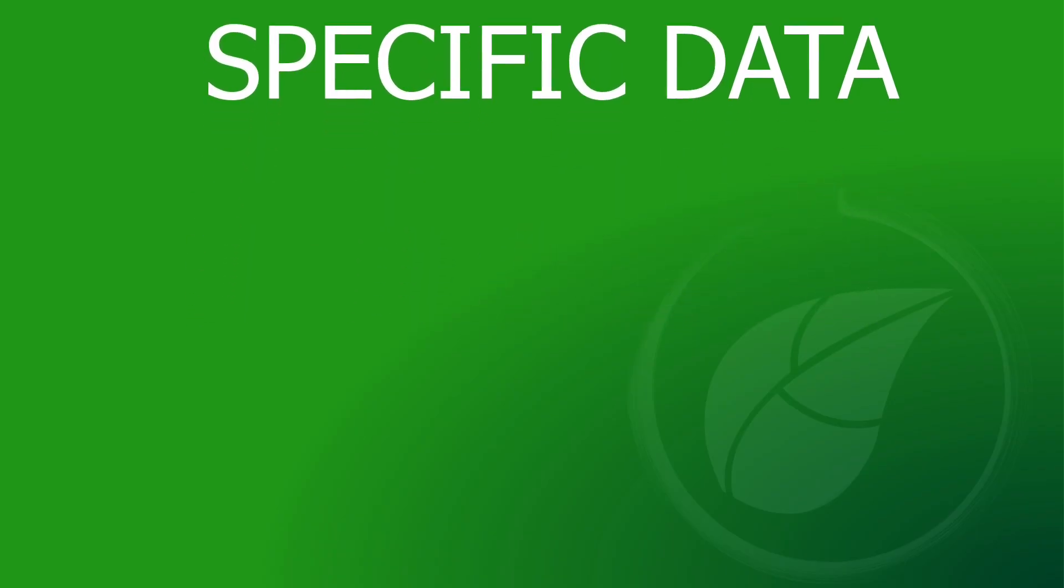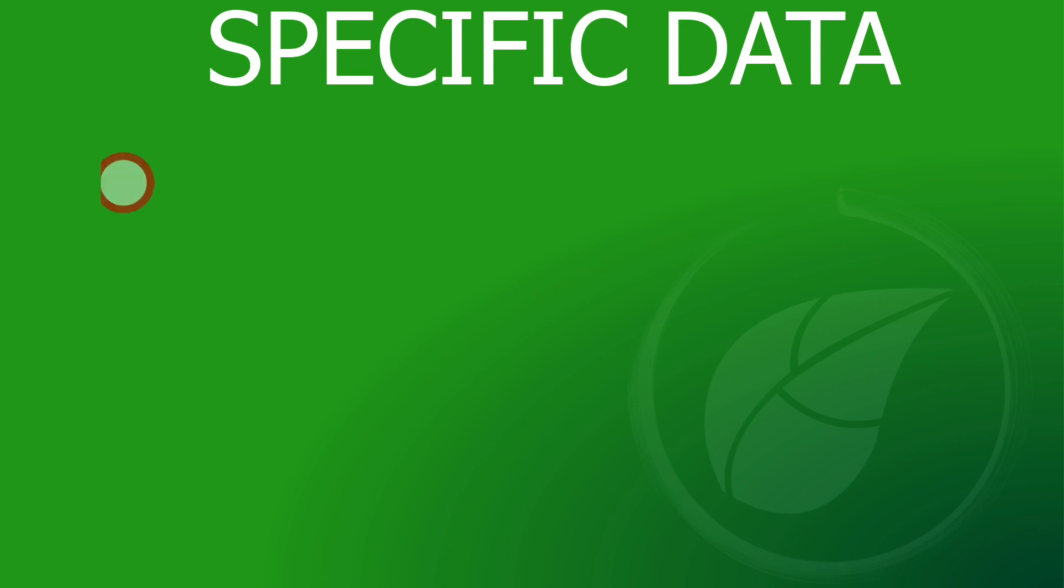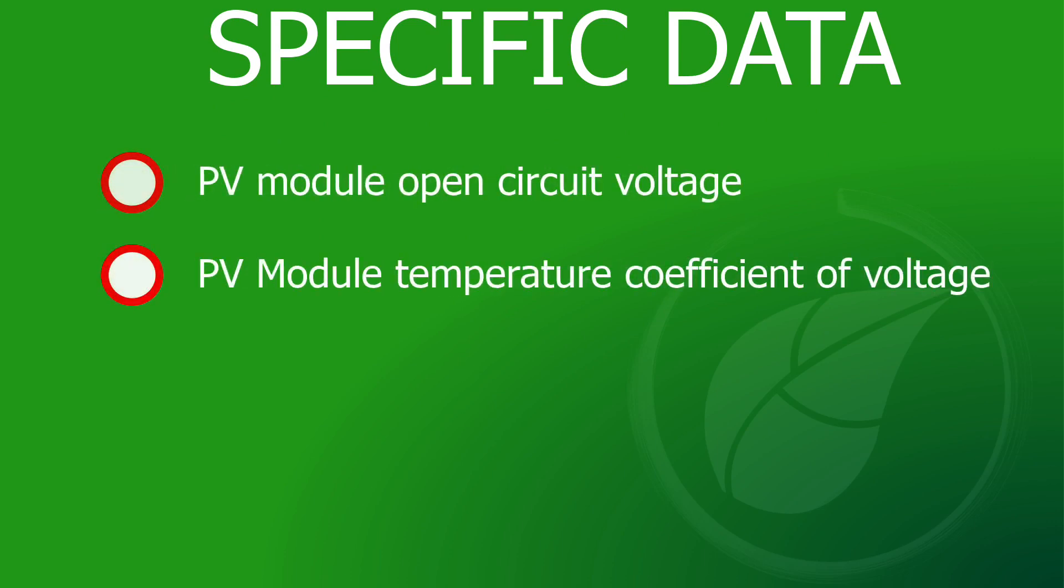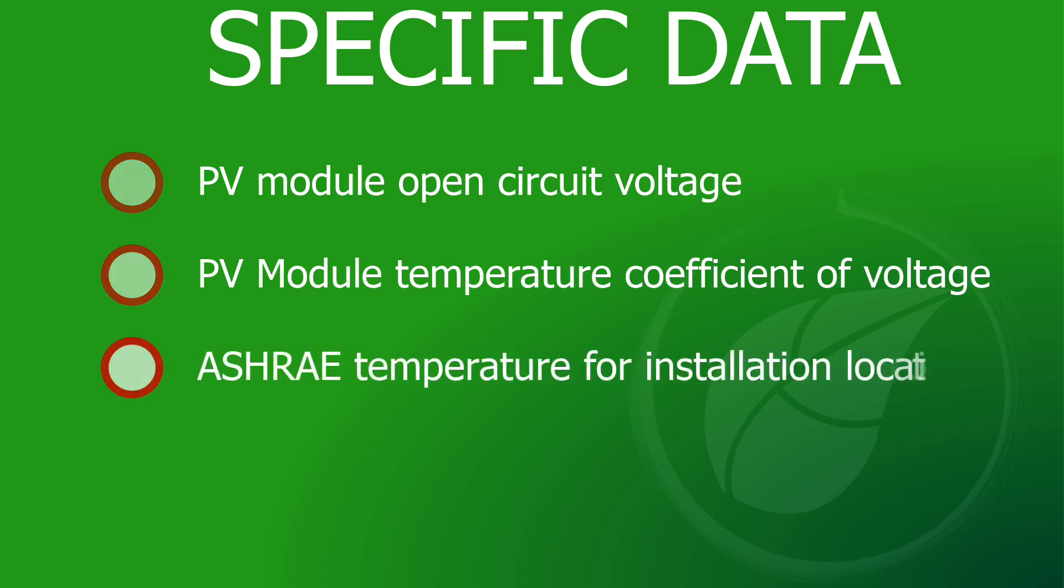There are four pieces of information we will need: PV module open circuit voltage, temperature coefficient of voltage, and ASHRAE temperature data for the installation location.